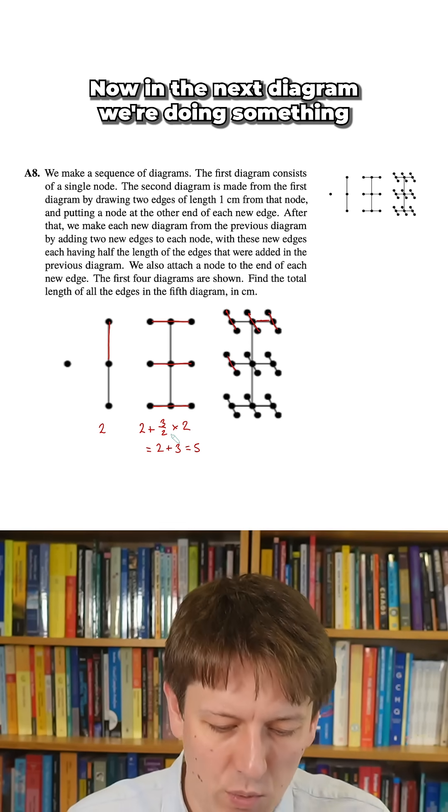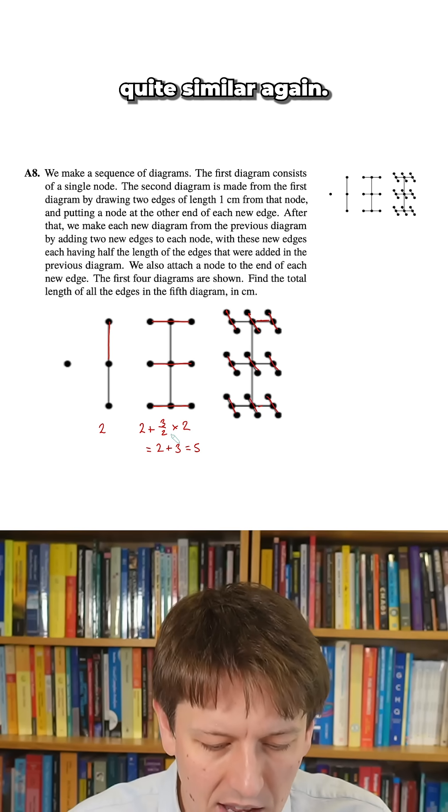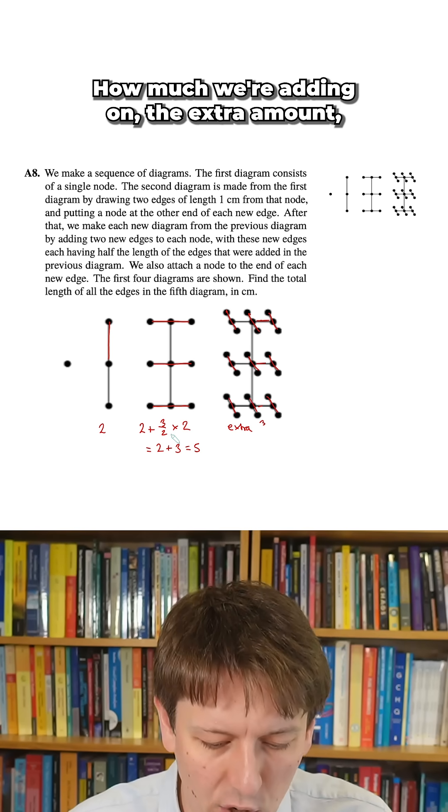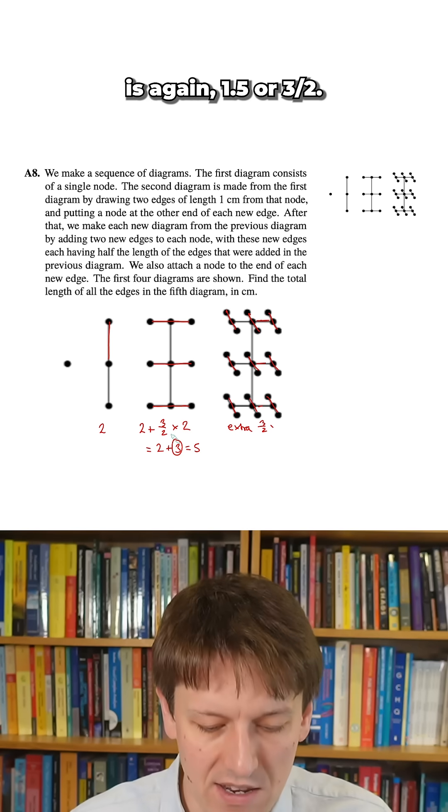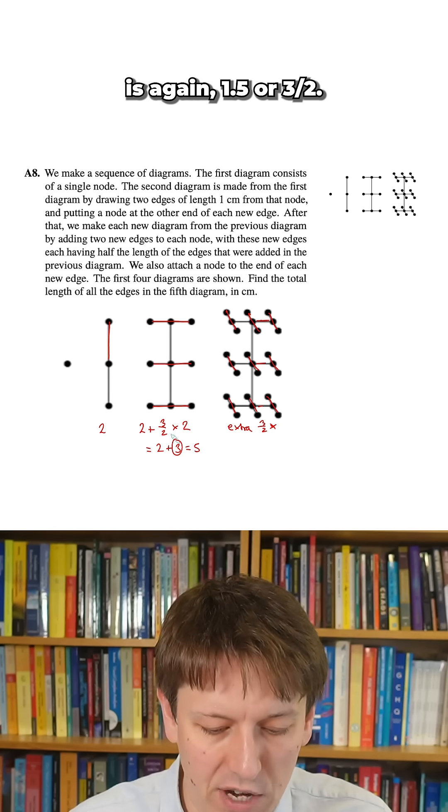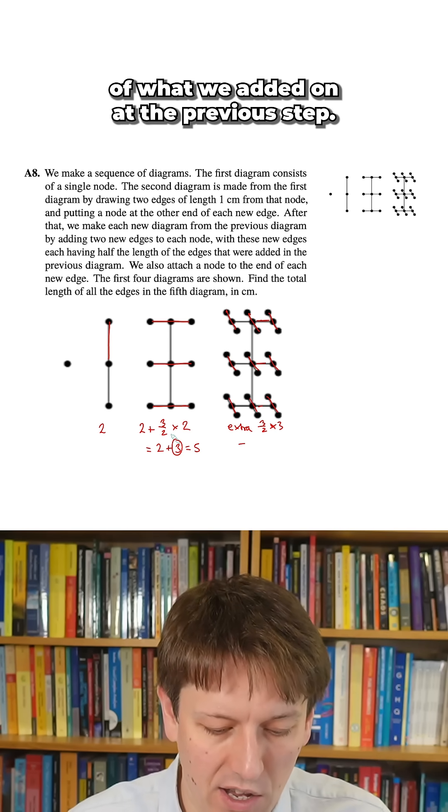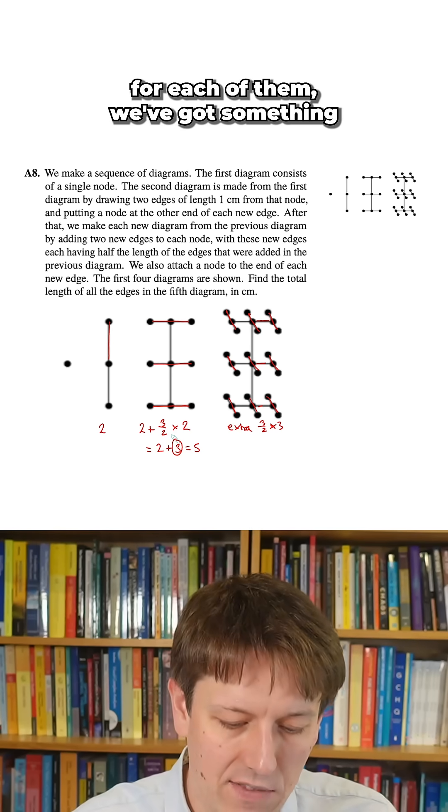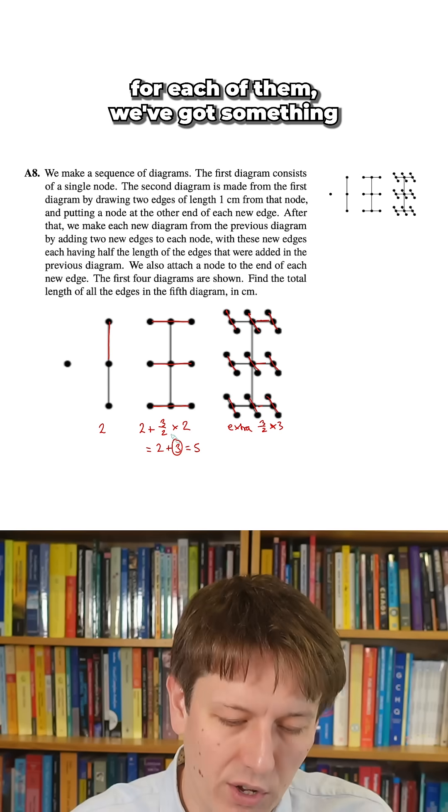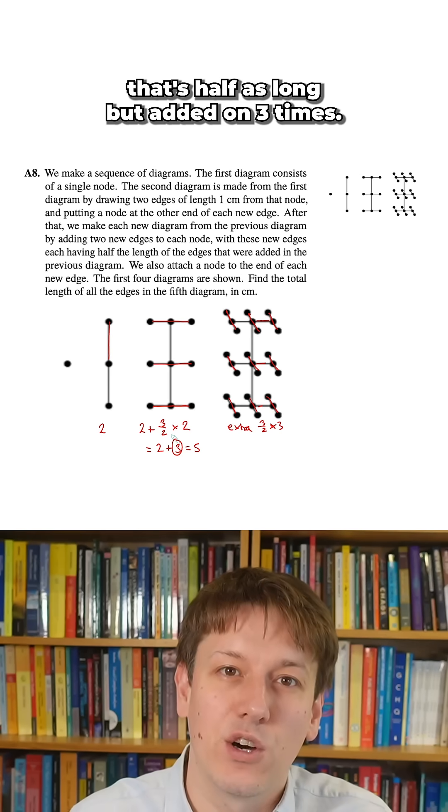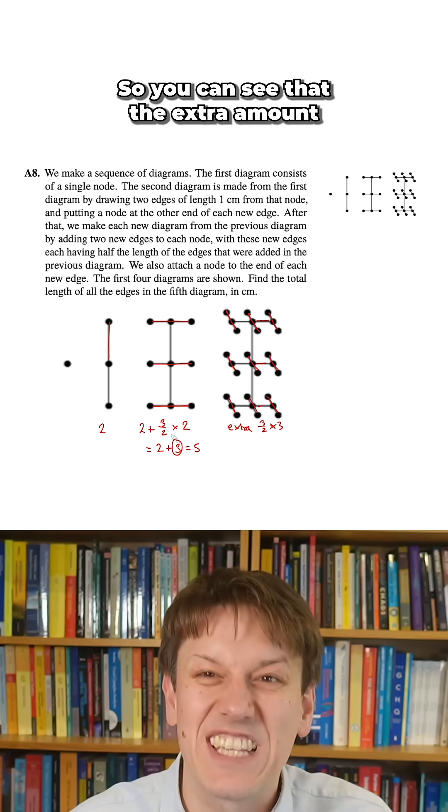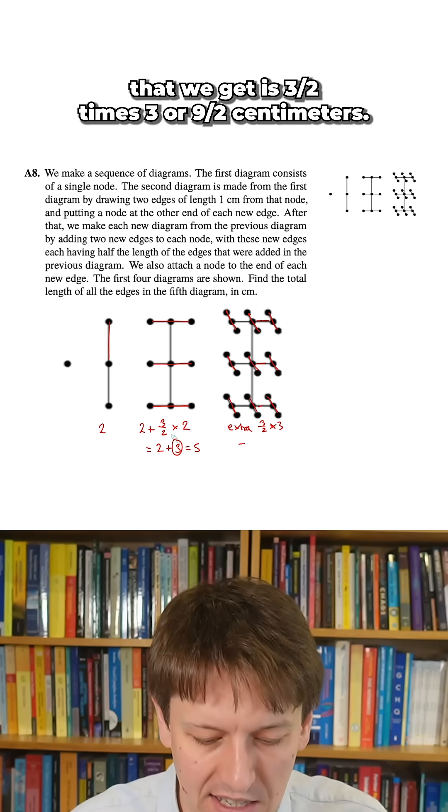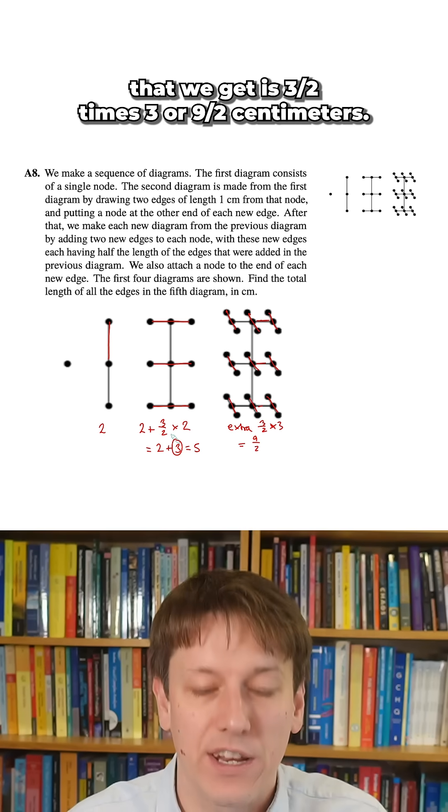Now in the next diagram we're doing something quite similar again, and the extra amount is again one and a half or three over two, so three lots of a half of what we added on at the previous step. So those horizontal lines that we added on previously, for each of them we've got something that's half as long but added on three times, so you can see that the extra amount that we get is three over two times three or nine over two centimeters.